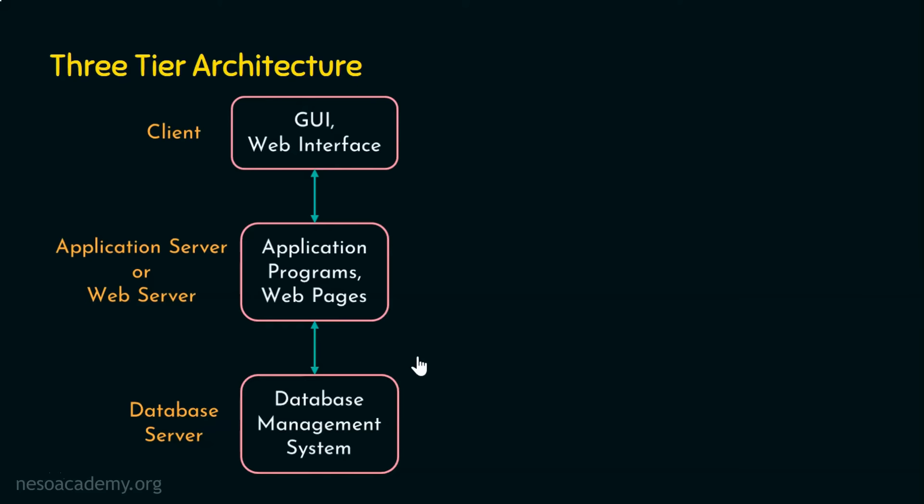The client level is actually the GUI, the graphical user interface or web interface level. The application server level deals with application programs and web pages. And the database server level deals with the actual database management system. Now you may ask: why do we need three tiers? Why not two tiers, like simply client and server?